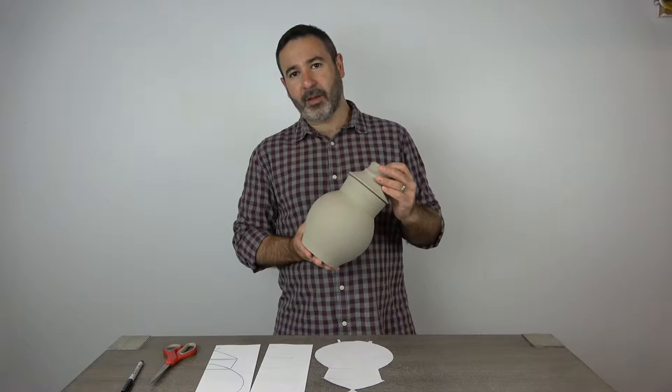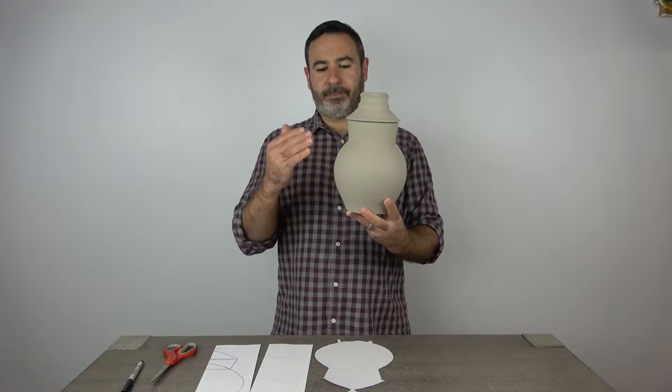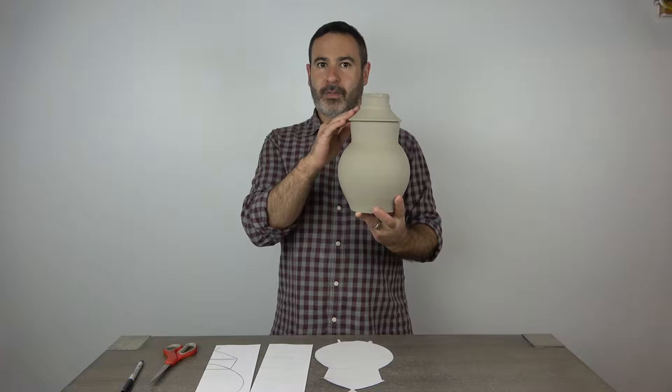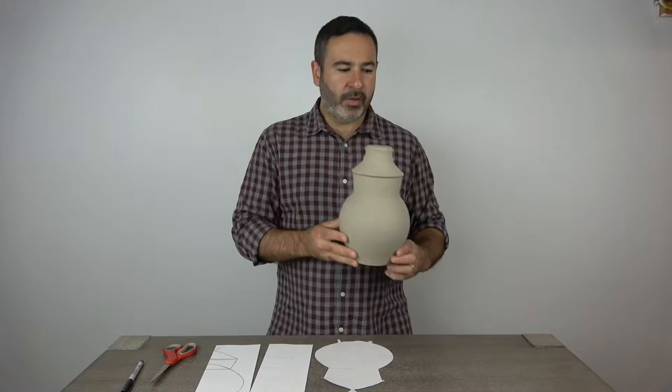You can see it's divided up into some different shapes. So we have a sphere, and a cylinder, or a slightly conical cylinder, and then a really sharp cone at the top. So that might be a little bit hard to understand what I'm talking about when I'm pointing at this pot.